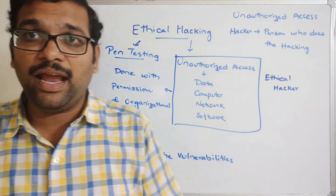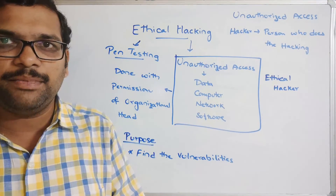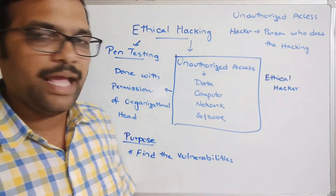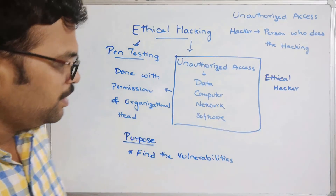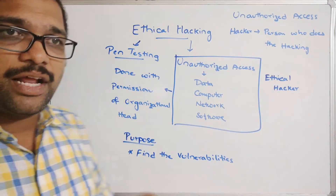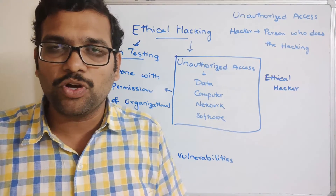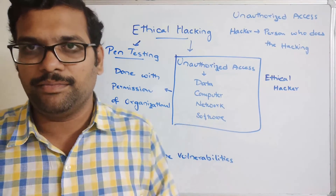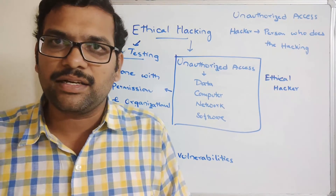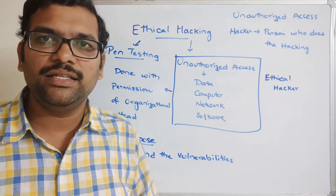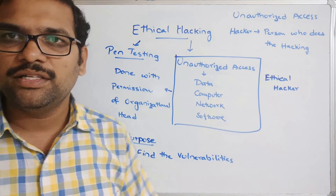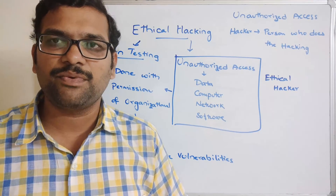That is the difference between hacking and ethical hacking. Hacking is an offense, while ethical hacking is done with permission from the organizational head. Hope you understood this introduction. In our further sessions we'll see the types of hackers and different types of malicious software, since hacking is done with the help of malicious software. Feel free to post doubts in the comment section. If you enjoyed the session, please like, share, and subscribe. Thanks for watching!